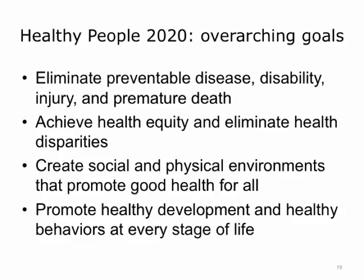Healthy People 2020 proposes four major overarching goals to address threats to the public's health: one, to eliminate preventable diseases, disabilities, injury, and premature death; second, to achieve health equity and eliminate health disparities; third, to create social and physical environments that promote good health for all; and finally, to promote healthy development and healthy behaviors at every stage of life.